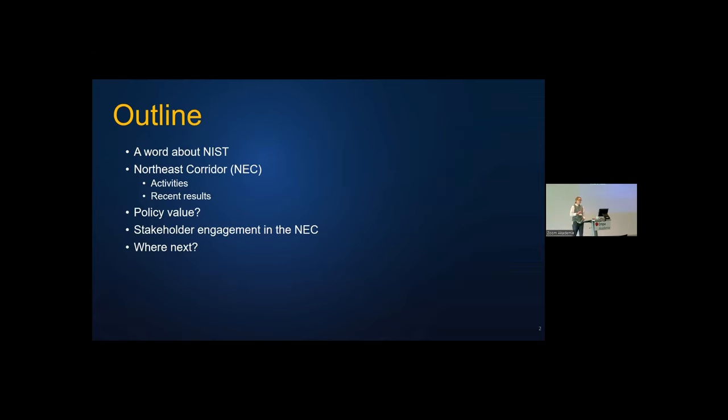The outline of this talk is I'm going to give a couple of words about NIST, what we do. Then I'm going to introduce the Northeast Corridor project, including some of the activities that are going on there and some recent results. Then I'm going to talk about what we found out about the policy value of our work and stakeholder engagement, and where are we going next with our greenhouse gas measurement program.